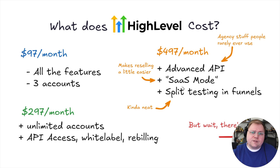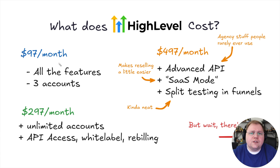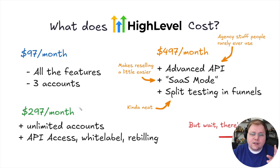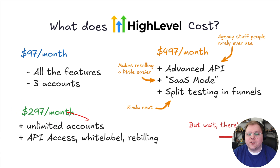So when someone says 'Doug, what plan do I need?' — well, if you're just a business that needs a CRM or email marketing, go for the $97 per month plan; you really don't need the rest. If you're an agency and want to take it to a high level, go to the $497 per month plan because that's where you get SaaS mode. I personally sat at the $297 per month plan for about a year and a half and was wildly profitable and successful without needing the $497 plan.